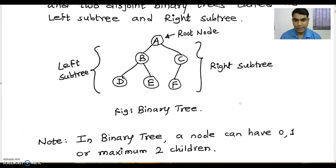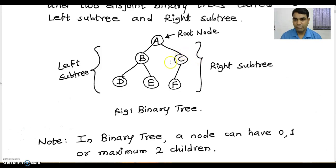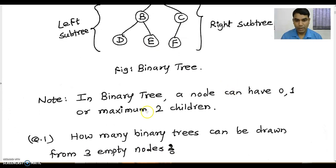Now see this example. This is the example of a binary tree where A is the root node, the left child is B, and the right child is C. All the elements appearing towards the left side of the root node come under the left subtree, whereas all the elements to the right side of the root node are called the right subtree. In every binary tree a node can have 0, 1, or maximum 2 children.